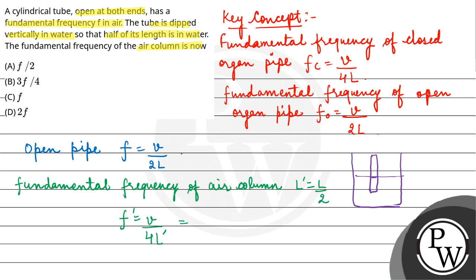So V/(4L') where L' = L/2 gives us V/(2L), which is the original frequency F. This means the frequency remains the same. Our final answer is option C, F. I hope you understood it well.